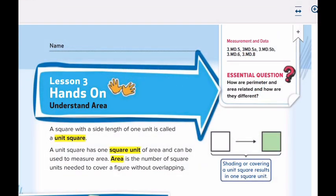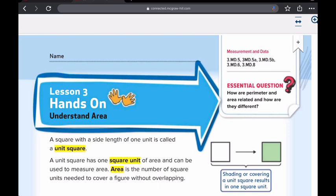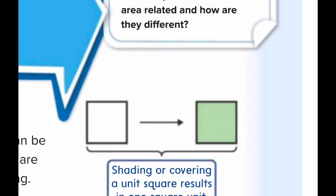Open page 765 and let's first understand what is a unit square. A unit square is a square with a side length of one unit. What do we call it? We call it a unit square. It has one square unit. One square unit is a unit square.